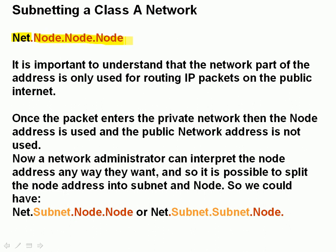But the last three bytes — node, node, node — are used, and as a network administrator, I can interpret those last three bytes in any way I want to. We can split the last three bytes: instead of interpreting them as node, node, node, we can interpret them as a subnet plus two node bytes, or subnet, subnet, and a node byte. This idea is very important — we're not changing the IP address in any way. We're reinterpreting what it means: how many bytes represent the network segment and how many represent the node segment.